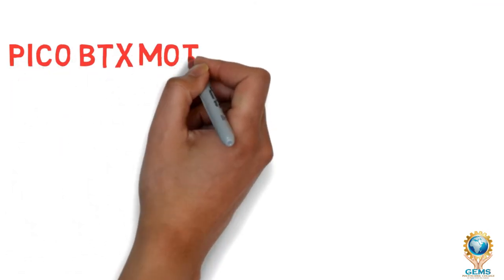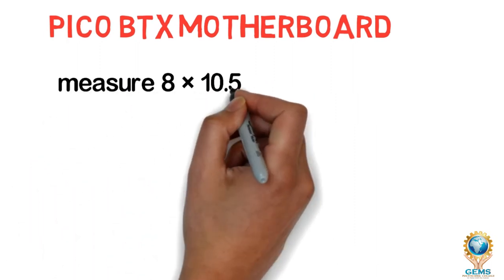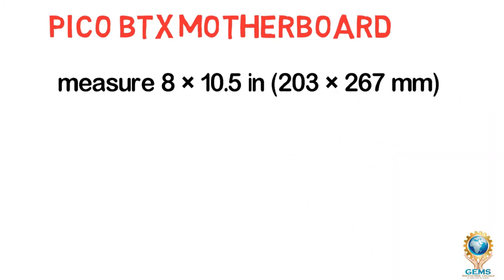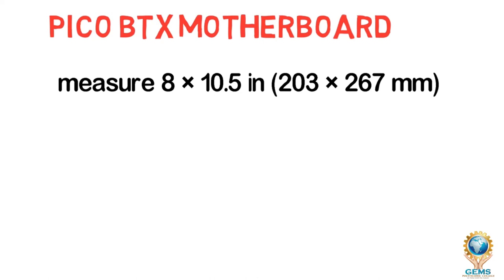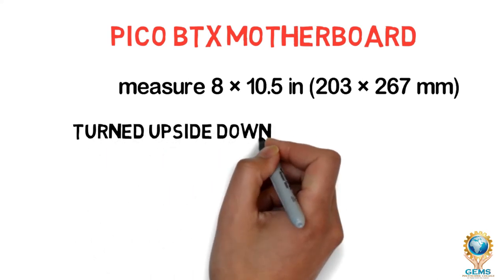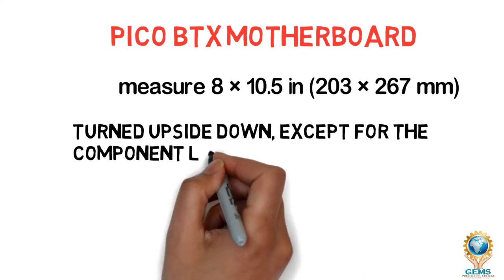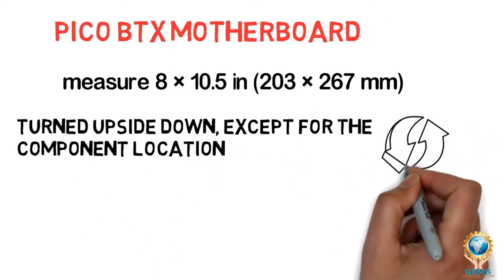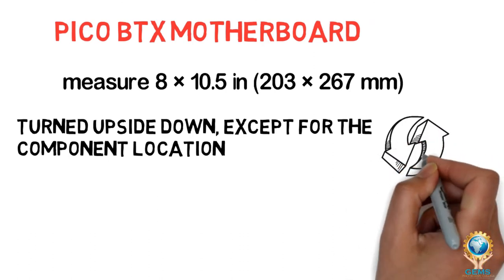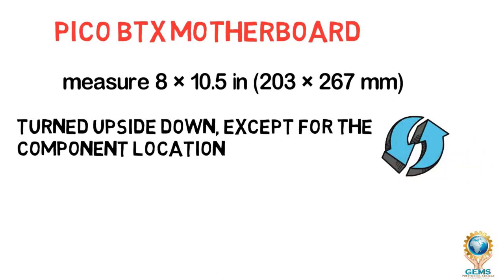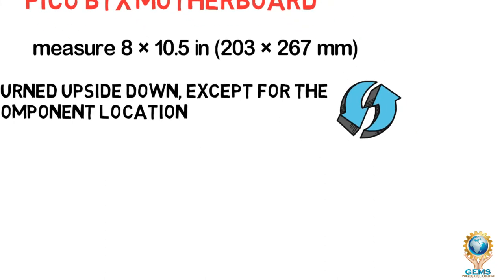Next is Pico BTX. Pico BTX is a motherboard form factor meant to miniaturize the 12.8 x 10.5 inch BTX standard, and the Pico BTX motherboard measures 8 x 10.5 inches, smaller than many current micro-size motherboards. In the first months of production, ATX and BTX motherboards were so similar that moving a BTX motherboard into an ATX case was possible and vice versa, because the first BTX motherboards were essentially ATX motherboards turned upside down, except for some components that were in true BTX positions.